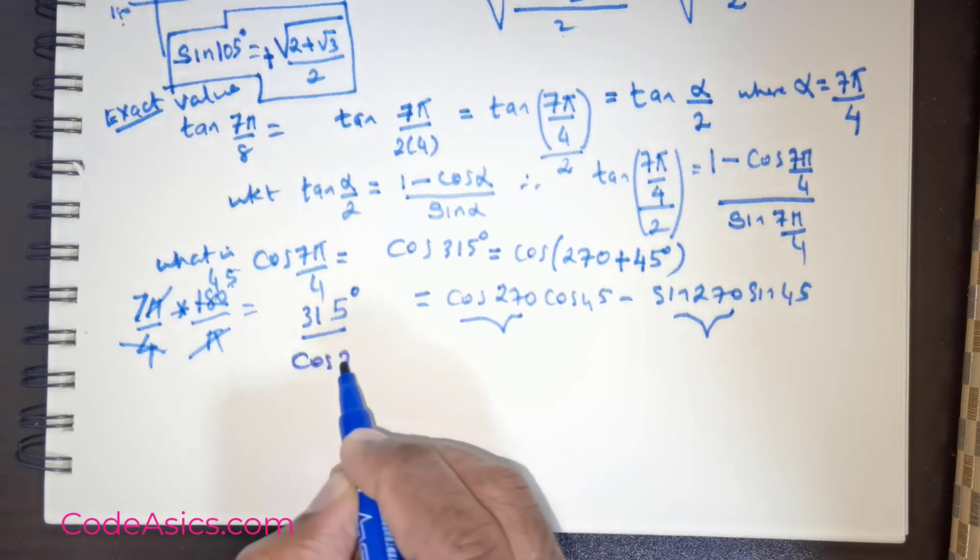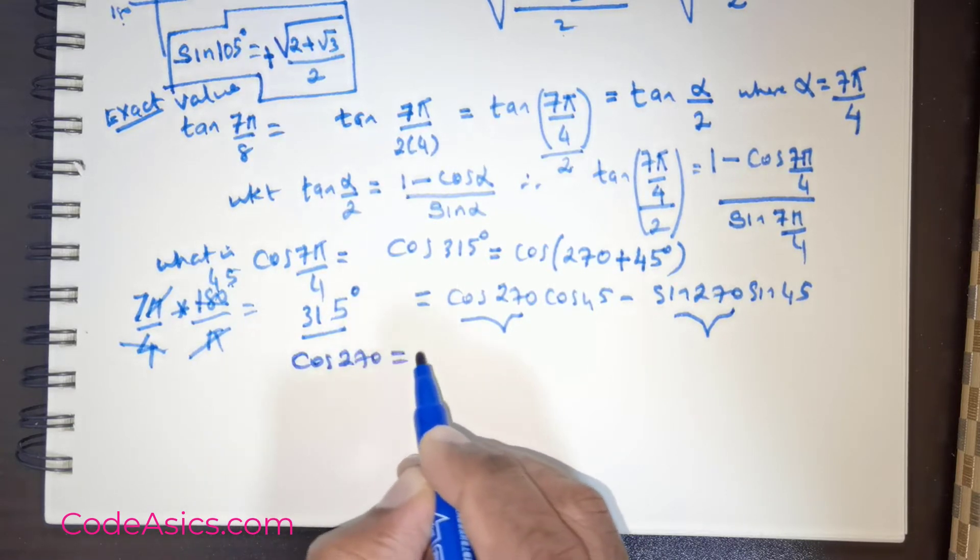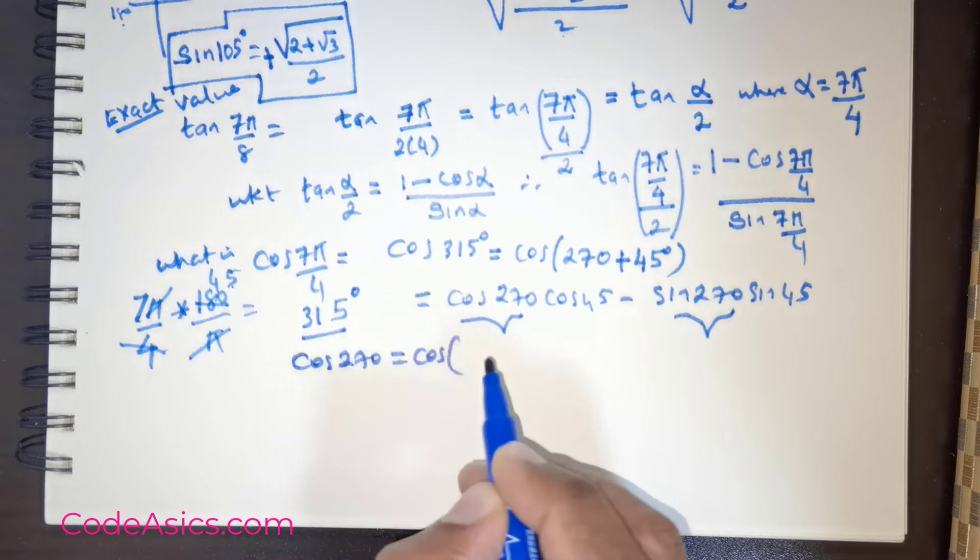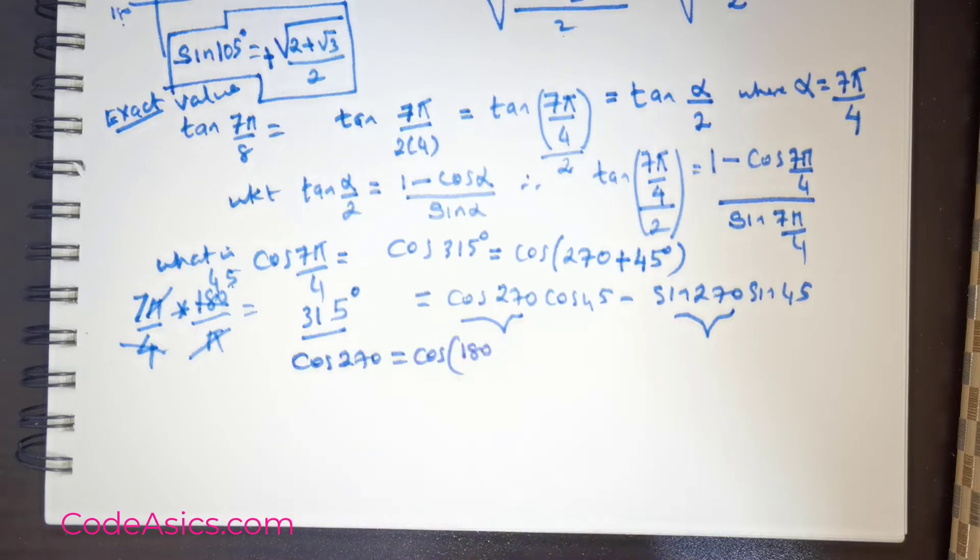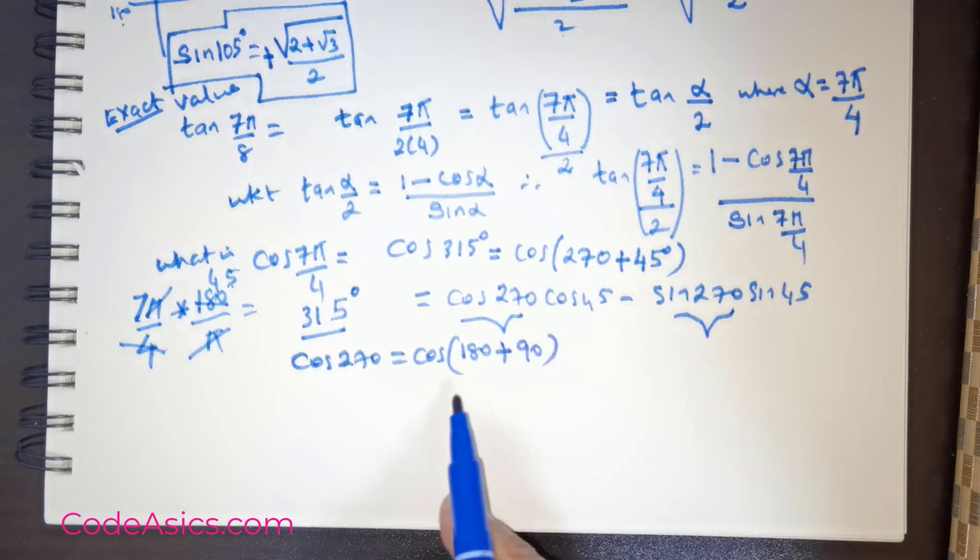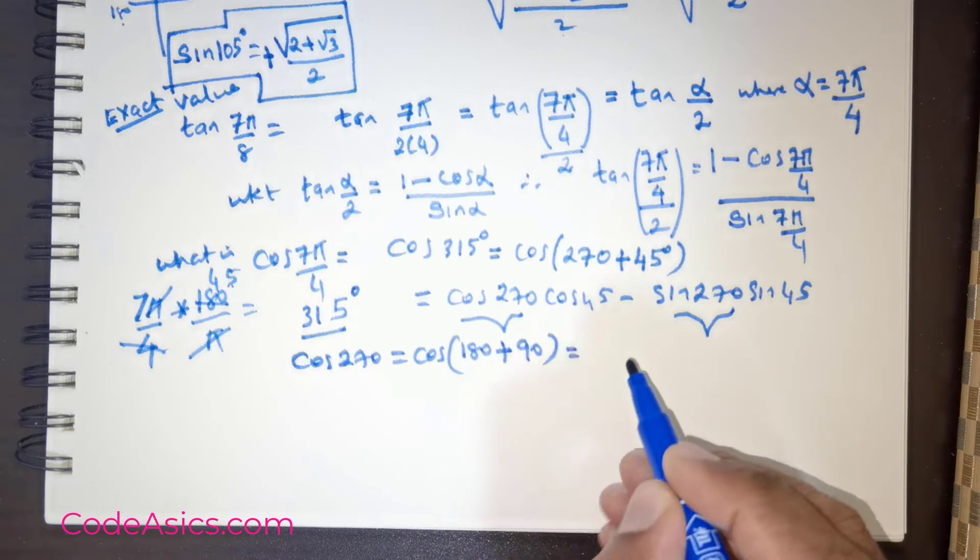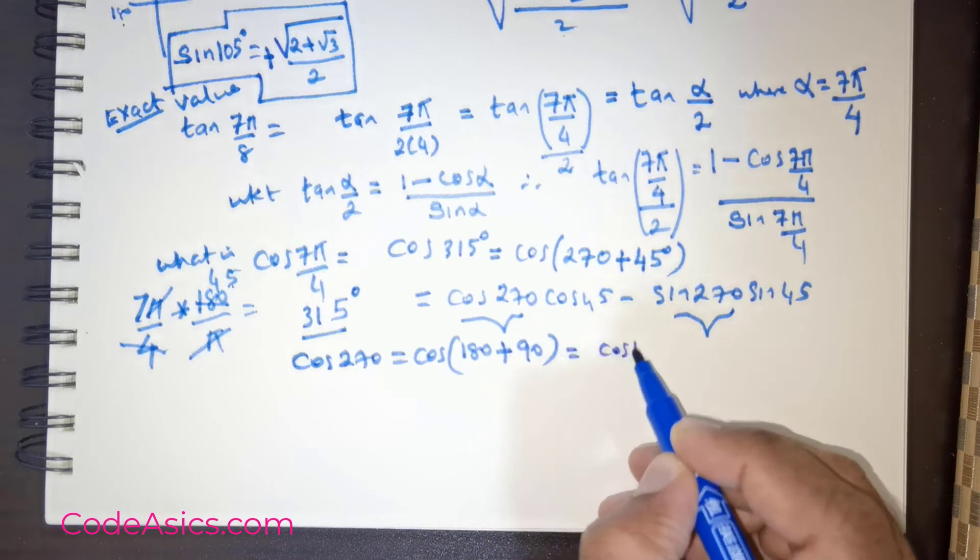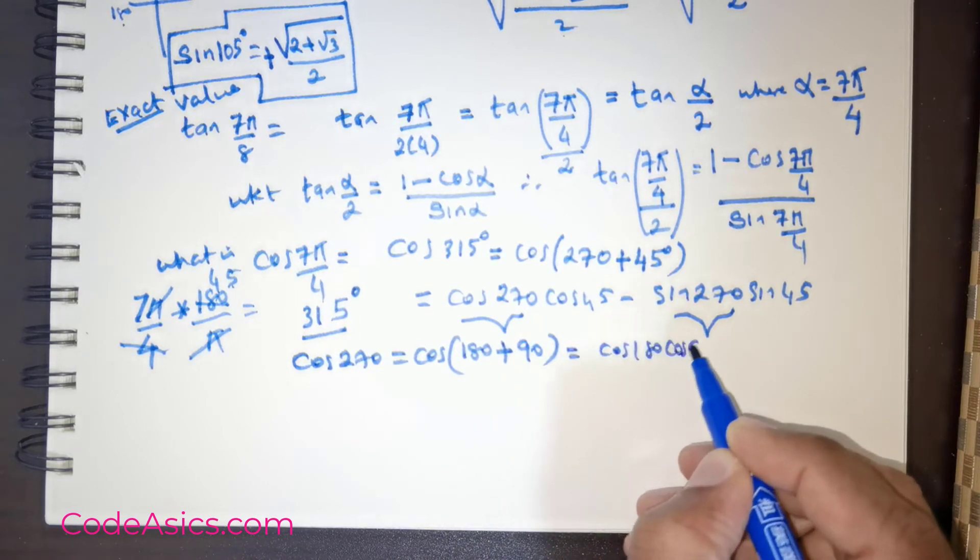Now for that, again we use the compound angle. Cos 270 is nothing but cos of 180° plus 90°, right? When you add 180 with 90, you get 270.